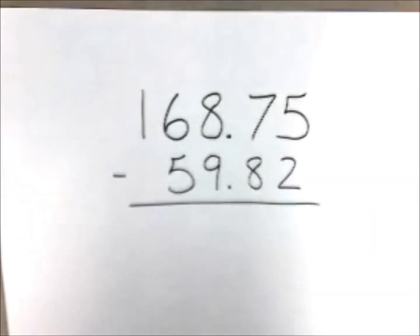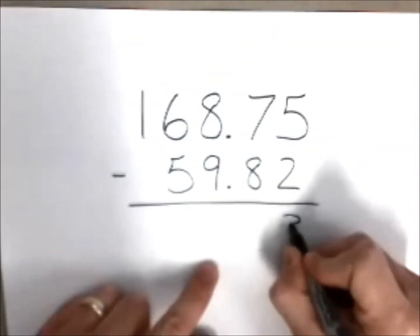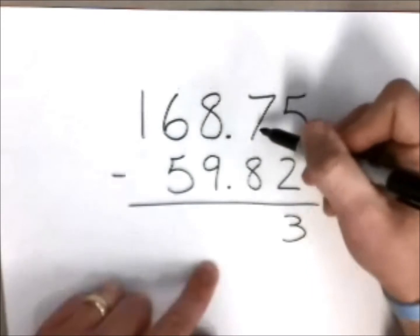Our last example today, we have 168 and 75 hundredths take away 59 and 82 hundredths. Five take away two is going to leave you with three.